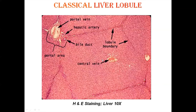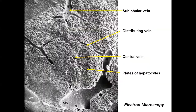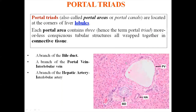In the electron microscope image we can see the central vein with cords of hepatocytes radiating from it, and in between we have connective tissue with veins distributing through it. These veins open into the central vein, which opens into sublobular veins and ultimately into hepatic veins. These are beautiful plates of hepatocytes visible in such high-resolution imaging.